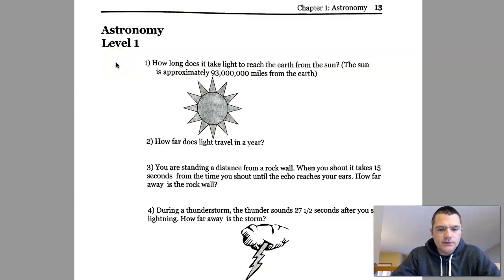Here are the questions for the first set of problems for this week. Question 1: How long does it take light to reach the Earth from the Sun? The Sun is approximately 93 million miles from Earth.